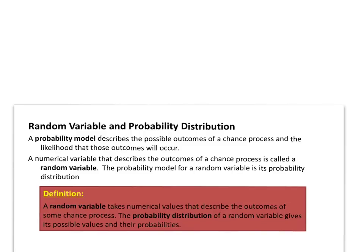We're going to take a look at probability in more depth. We often represent this with a model. A model describes all possible outcomes of some sort of chance process and lists the likelihood that these outcomes would occur. The numerical variable that describes the outcomes of a chance process is called a random variable. The probability model for a random variable is a probability distribution.